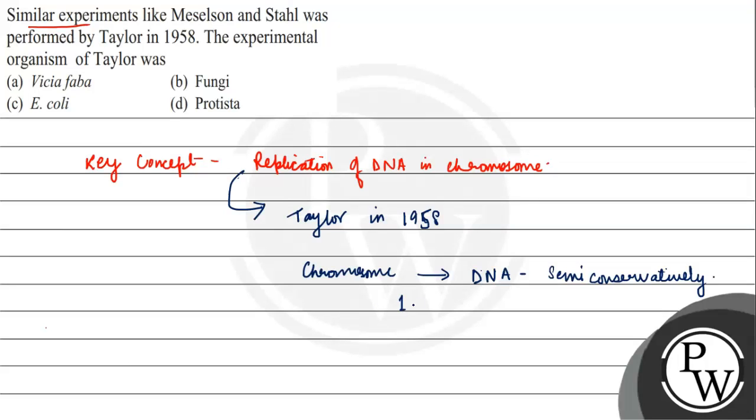there will be one parent strand and one new strand in the DNA of the offspring, or you can say after the DNA is replicated in the offspring.